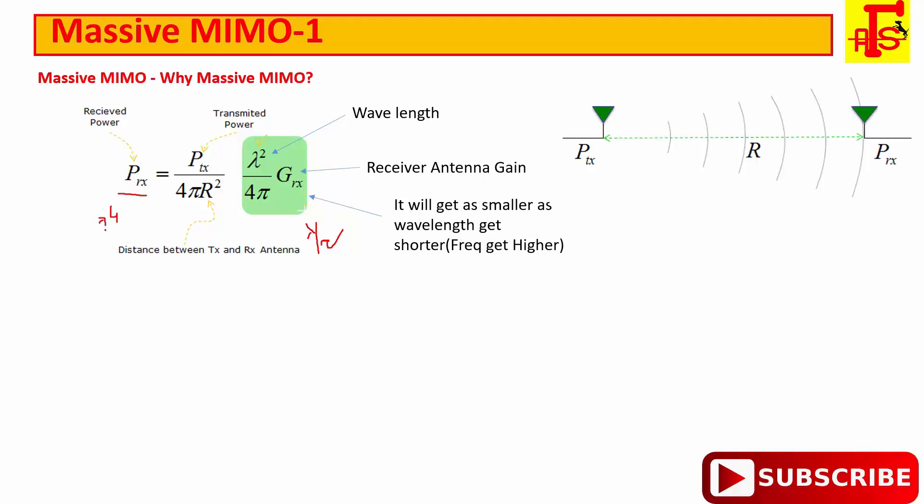In another example, if we use 3 GHz frequency in current communication and now we use 30 GHz frequency in 5G, wavelength in 30 GHz is 10 times shorter than 3 GHz. Because it is increased by 10 times, then wavelength will decrease also by 10 times. It means receive power at 30 GHz will be 100 times lower than the receive power at 3 GHz.